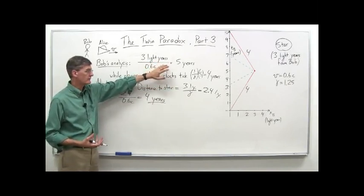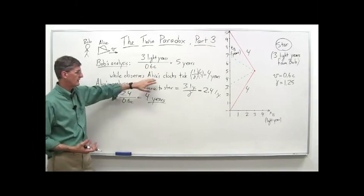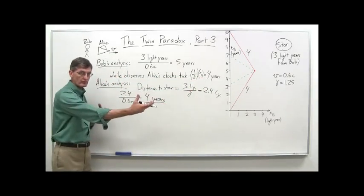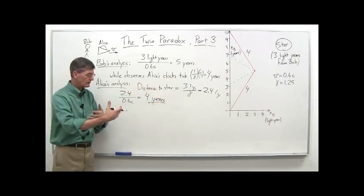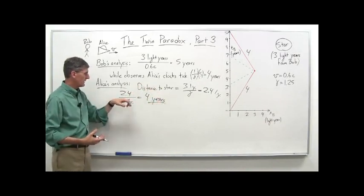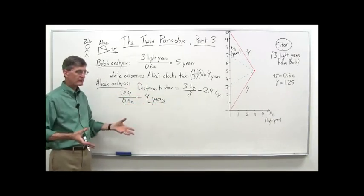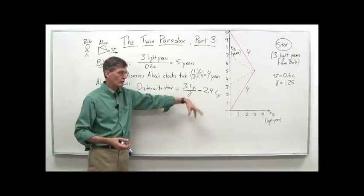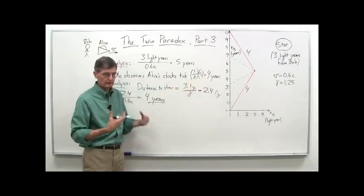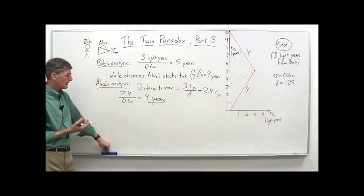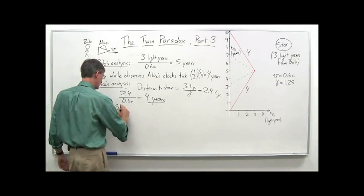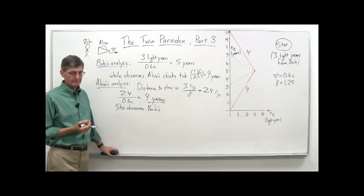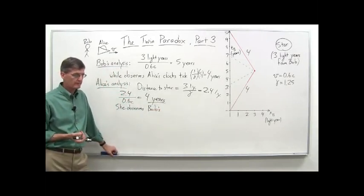Bob sees his clocks tick off five years while Alice travels three light years, and he sees time dilation - her clock is time dilated, so four years. Alice sees the distance of the star contracted to 2.4 light years, and at that velocity, it takes four years for the star to reach her. Both agree Alice's clock in her spaceship ticks off four years from the time she leaves until the star gets to her. Now, what about her observation of Bob's clocks? We have to be careful here, because Bob has at least two clocks involved.